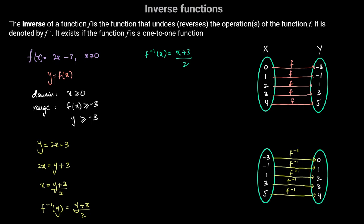Going back to the definition: the inverse of f undoes or reverses the operation of f. The function f takes the input x, multiplies it by 2, and subtracts 3. To reverse those operations, we add 3 to the input and then divide by 2. So we multiply by 2 and subtract 3 for f, and for the inverse function we add 3 and divide by 2 — reversing the operations step by step to give us f inverse of x.